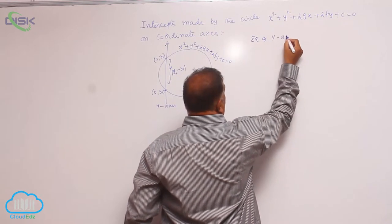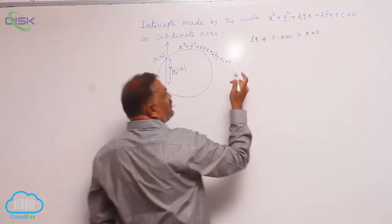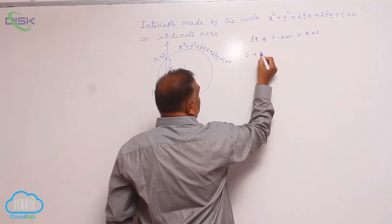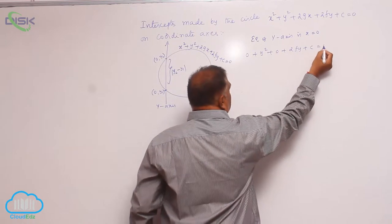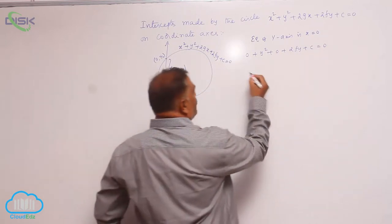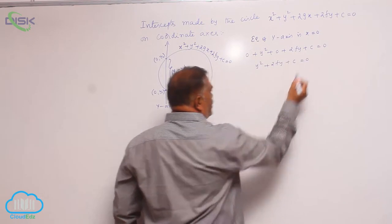So the equation of the y-axis is x equals 0. Substitute this in the circle equation: you will get 0 plus y square plus 2fy plus c is equal to 0. Now y square plus 2fy plus c equals 0.